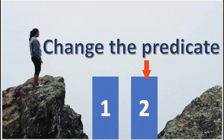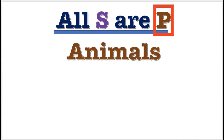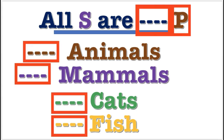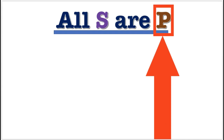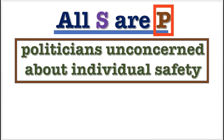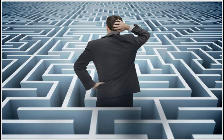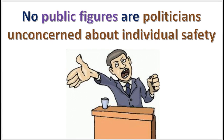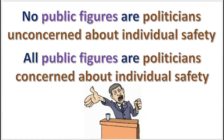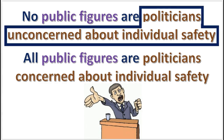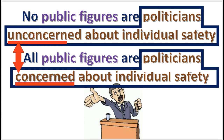Complementing the predicate: for simple predicates like animals, mammals, cats, fish, we can simply attach the prefix 'non.' But when it comes to more complex predicates, like 'politicians unconcerned about individual safety' or 'lawyers motivated by narcissistic greed,' we must get a little more creative. For example, if we obvert 'no public figures are politicians unconcerned about individual safety,' it is best to write 'all public figures are politicians concerned about individual safety.' To complement the predicate 'politicians unconcerned about individual safety,' it is best rendered 'politicians concerned about individual safety.'